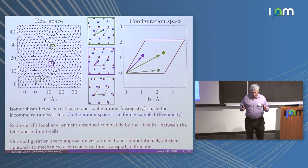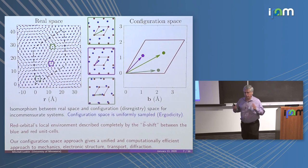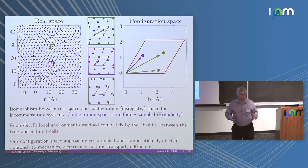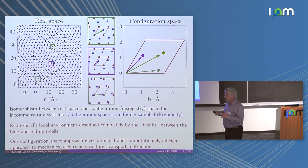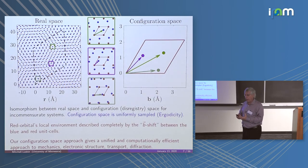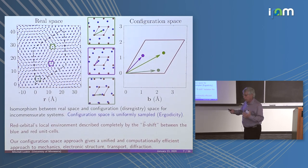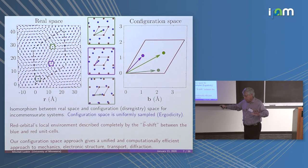A fundamental contribution from our mathematical work is this notion we call configuration space. Pretty much everything — from relaxation to electronic structure to conductivity — is going to be formulated in the variables of configuration space rather than wave number. The standard tool is the Bloch transform, where you're always doing integrals over the Brillouin zone — integrating some trace of an operator over the Brillouin zone. That pretty much covers everything.